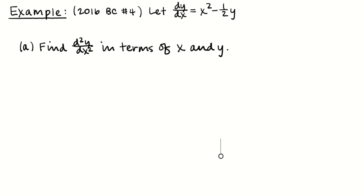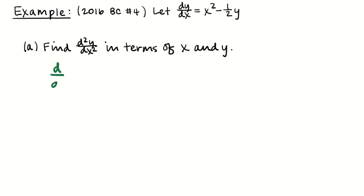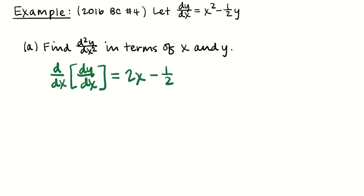The last example is from the 2016 BC exam — a full free-response question about differential equations. The first part is to find the second derivative in terms of x and y only. We'll do that implicitly: the derivative of dy/dx with respect to x is the derivative of x squared minus 1/2 y, which is 2x minus 1/2 times dy/dx. Since they want it in terms of x and y only, we write that as x squared minus 1/2 y. We might need that in the next part.